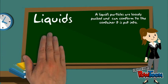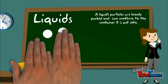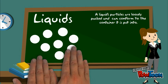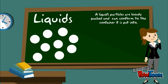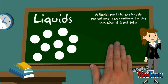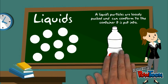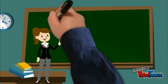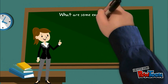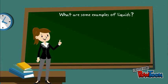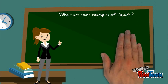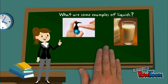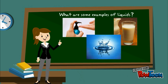A liquid's particles are loosely packed and can conform to the container it is put into. In this example, the particles are conforming to the bottle. Some examples of liquids include milk, soap, and water.